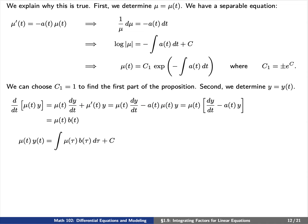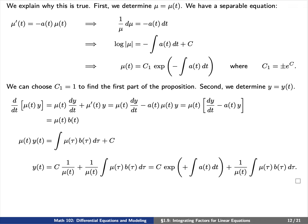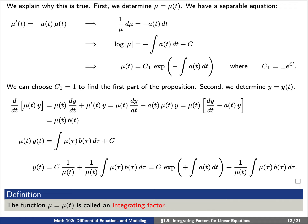Now we see that d/dt of the product mu times y equals the product mu times b. We'll integrate both sides to find that mu of t times y of t equals the integral of mu of tau times b of tau d tau, plus a constant c. Finally, we can divide by mu of t to find our explicit solution to our non-homogeneous differential equation. This function mu of t is called an integrating factor — literally, it's a function so that if we multiply our non-homogeneous differential equation on both sides by it, then the left-hand side is the derivative of a product, and we can use this to integrate and find our solution.